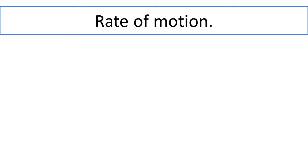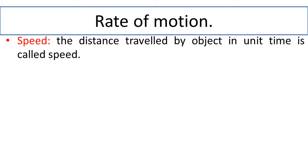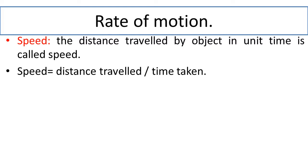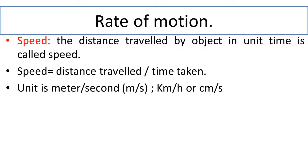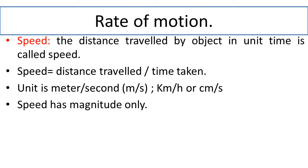Next, we will describe the rate of motion, which is called speed. The distance traveled by an object in unit time is called speed. Mathematically, speed equals distance traveled divided by time taken. Its units are meter per second, kilometer per hour, and centimeter per second. Speed has magnitude only — it has only a numerical value and no direction, so it is a scalar quantity.